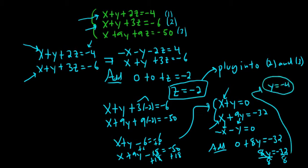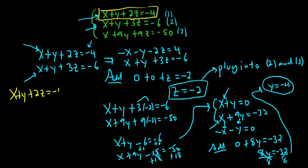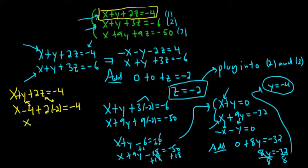So now we have z and y, we just need x. We can plug into any of the equations — let's use the first: x plus y plus 2z equals negative 4. Plugging in y equals negative 4 and z equals negative 2, we get x minus 4 plus 2 times negative 2 equals negative 4. So x minus 4 minus 4 equals negative 4, which is x minus 8 equals negative 4. Adding 8 to both sides, we get x equals 4.